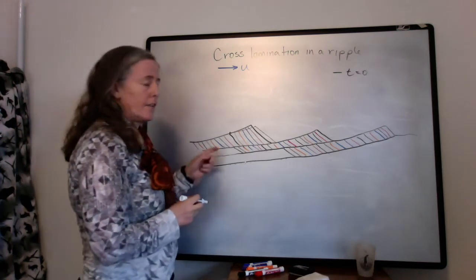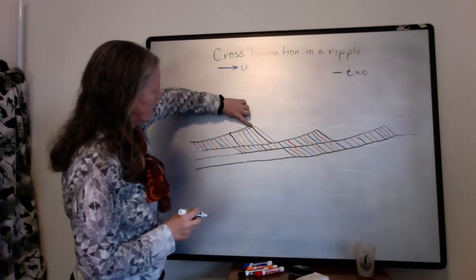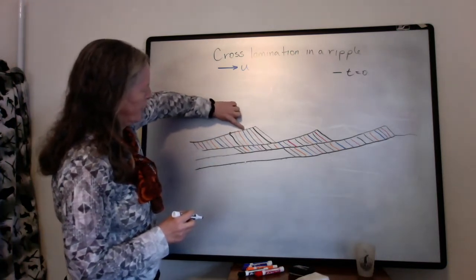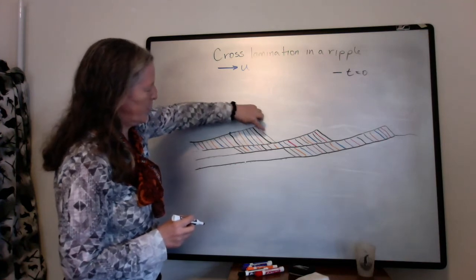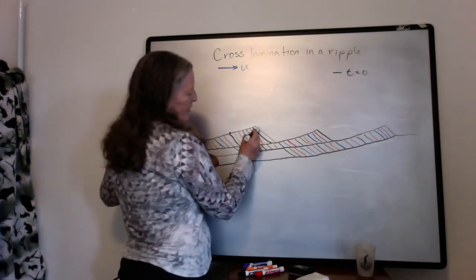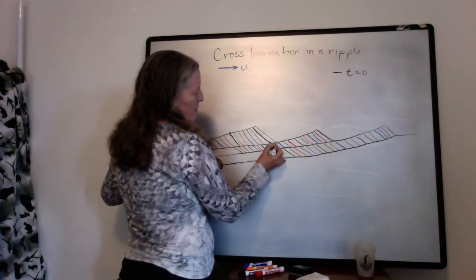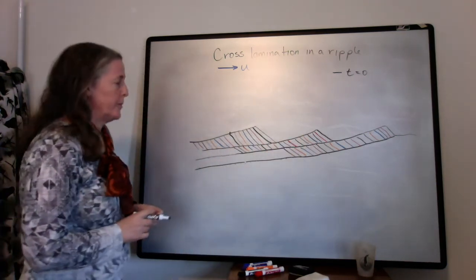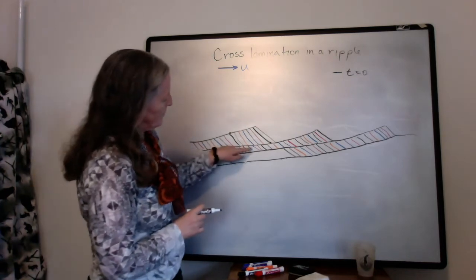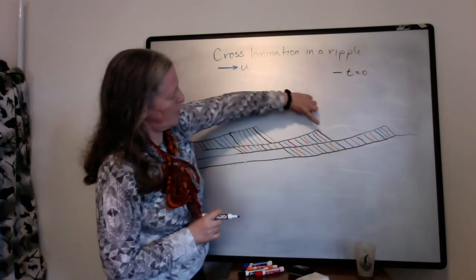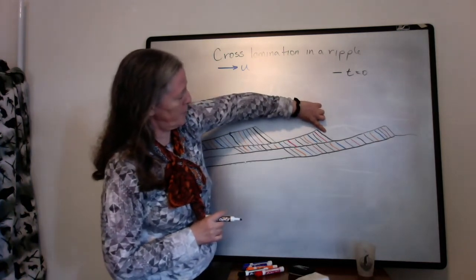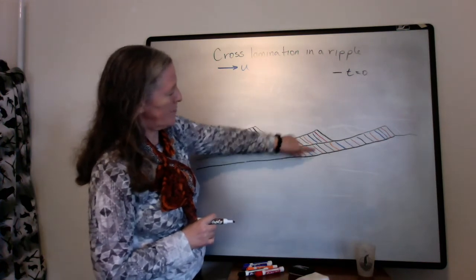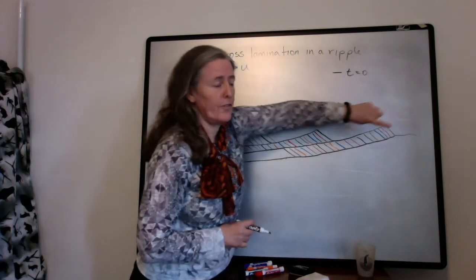Okay, so there are several key parts. One is that this part of the ripple gets eroded away, and that sand gets transported here. And then this layer sits on top of the back of the ripple that's downstream from it. So this set of lamina form at the downstream side of this ripple. This set of lamina form at the downstream side of this one.